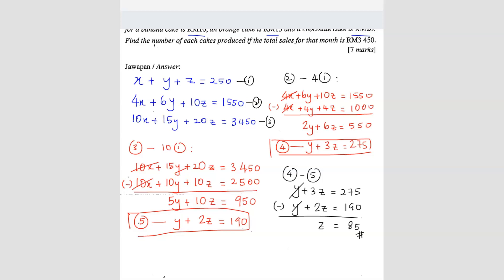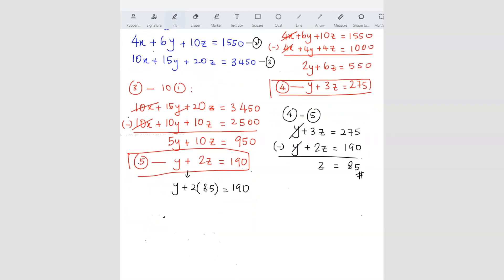So we already found z. We just substitute into one of the equations. I'm going to use this one: y plus 2z equals 190. From here we know that y equals 190 minus 85 times 2, which is 170. So I get y equals 20.